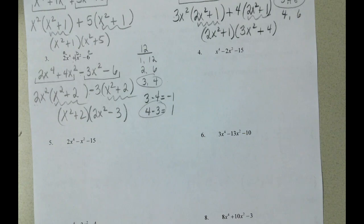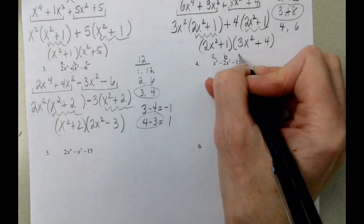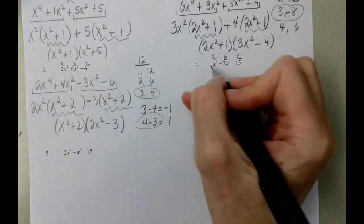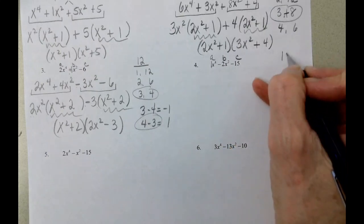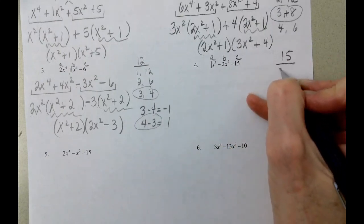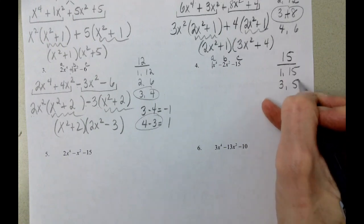Problem number 4. A, B, and C. The number in front of the x to the 4th is 1. 1 times 15 is 15. So factors of 15 are 1 and 15, and 3 and 5.